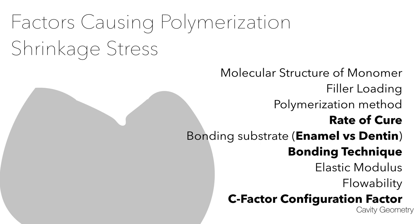The elastic modulus of the material — or the flexibility and flowability of the resin composite — is another factor. Flowable composites have a greater tendency to shrink. The C-factor, or configuration factor, relates to stresses generated because of cavity shape or geometry. All of these factors are responsible for polymerization shrinkage.